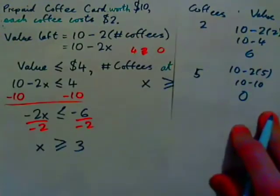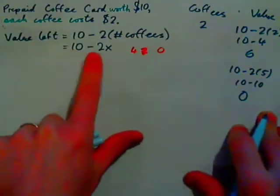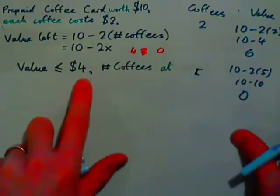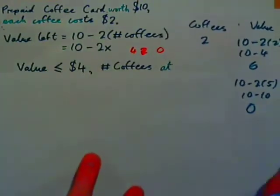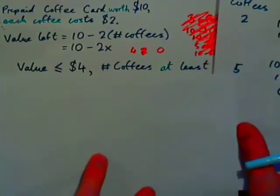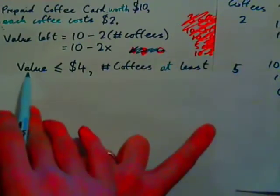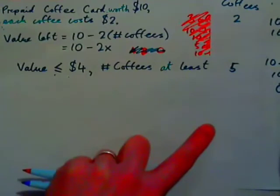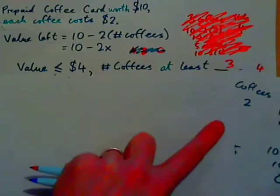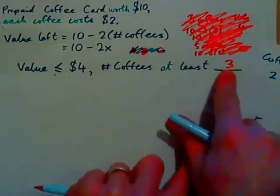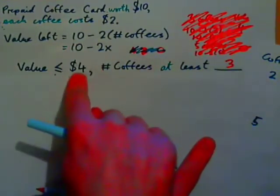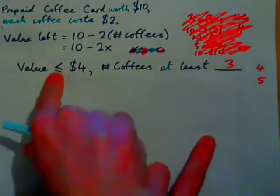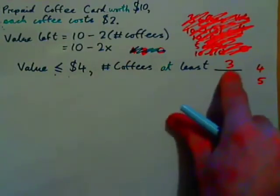If x is the number of coffees, the value is 10 minus 2x. What if we want the value to be less than or equal to $4? You'd need at least 3 coffees, because 10 minus 2 times 3 equals 10 minus 6, which is exactly $4. With 3, 4, or 5 coffees, the value would be less than or equal to $4.